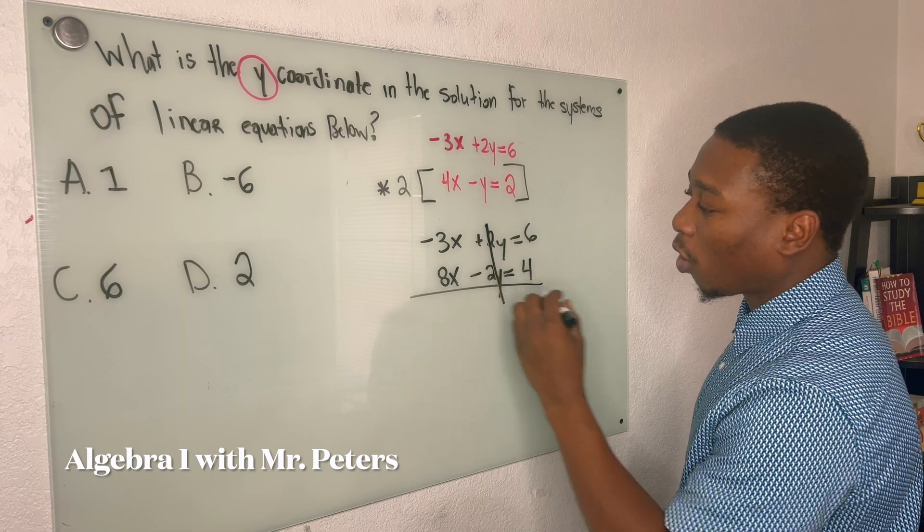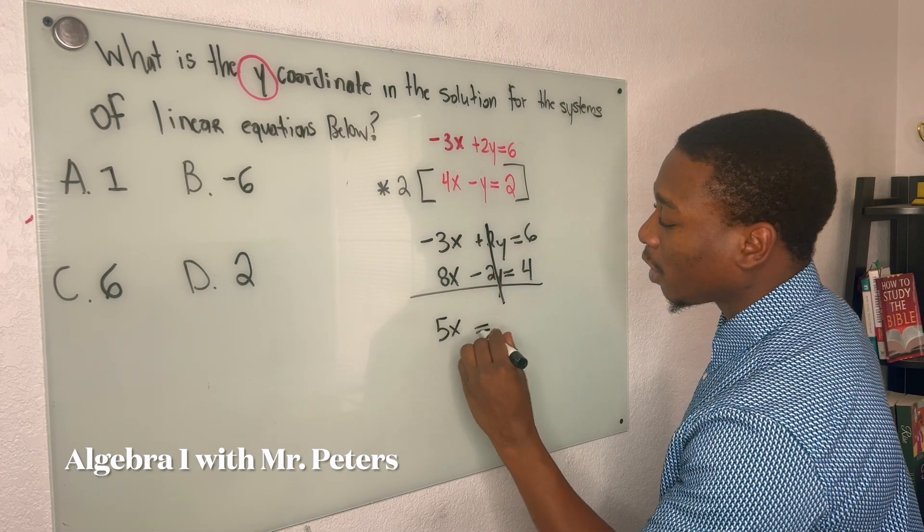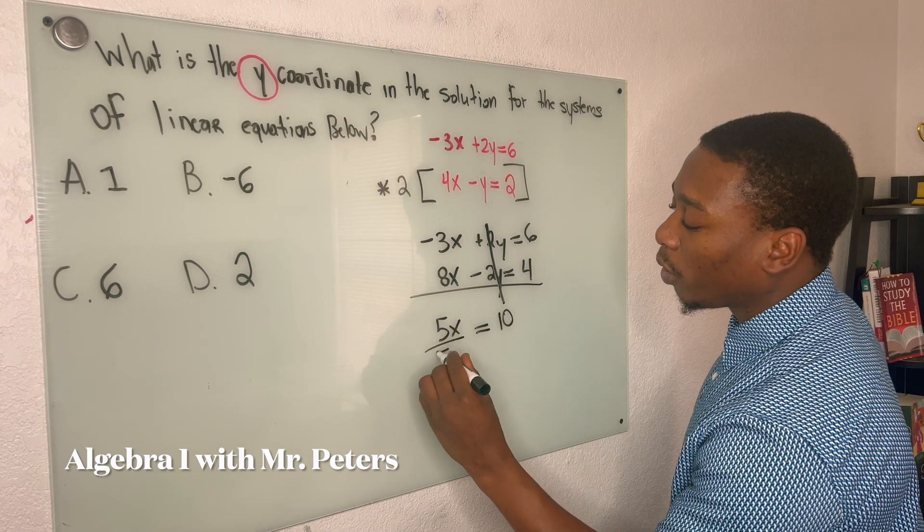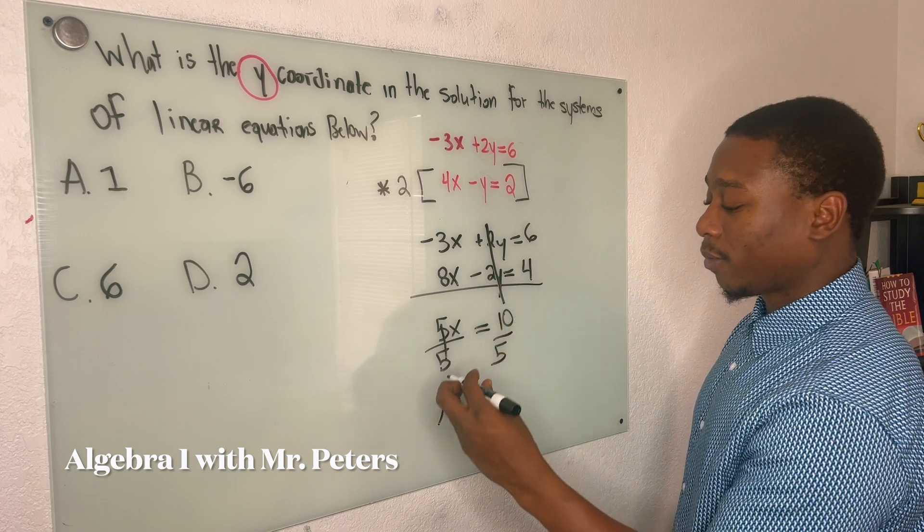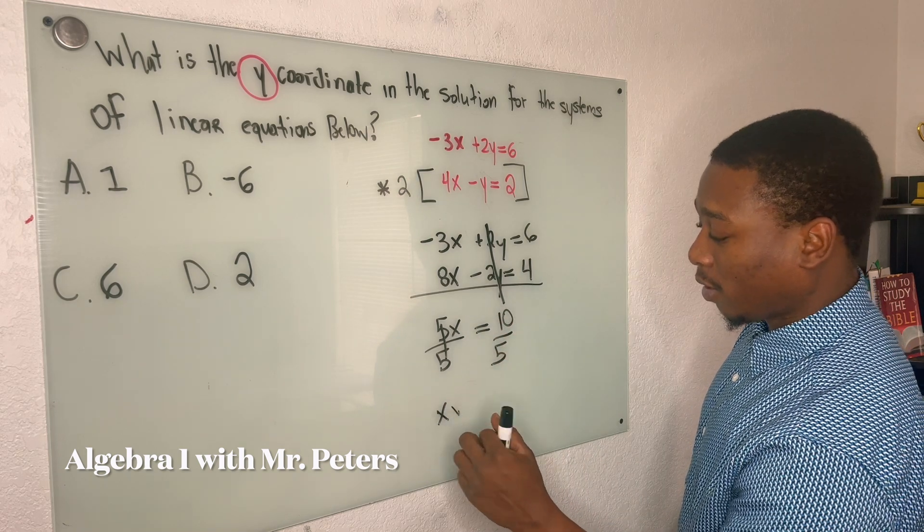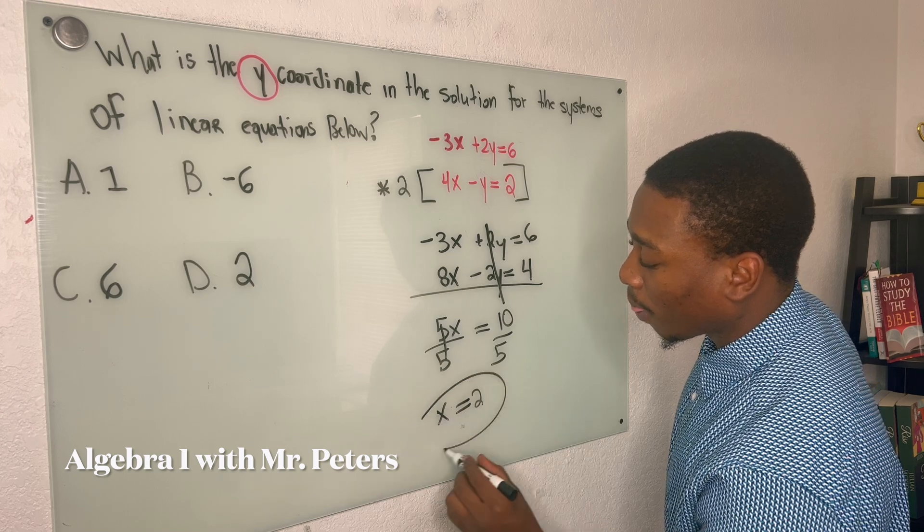And now we could use elimination to solve, right? So cross-cancel, now we have 5x is equal to 10. And when we divide by that 5, we're going to get x is equal to 2, right?